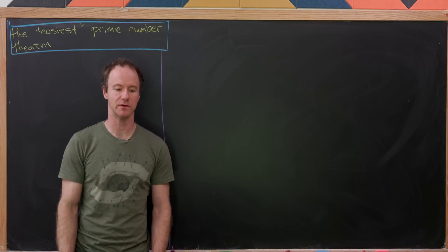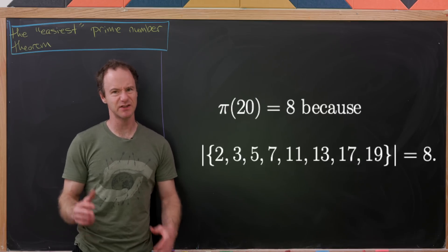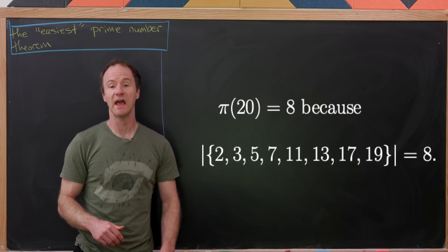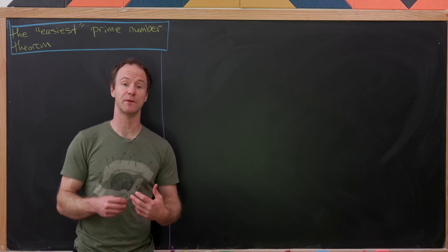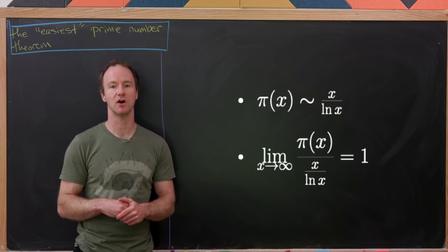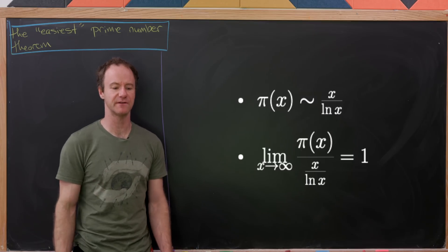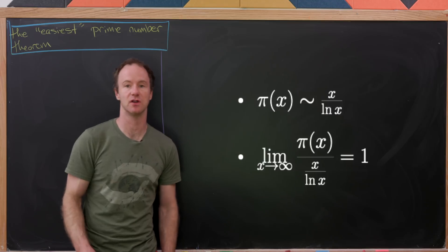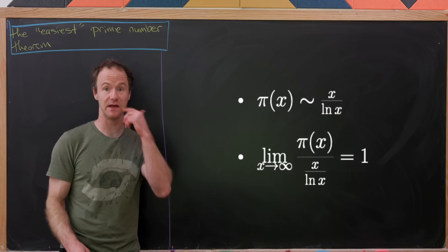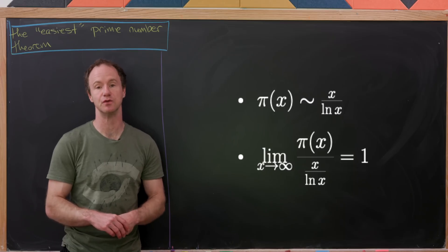As a simple example, notice that π(20) is equal to 8, because you can easily write down all 8 primes less than 20. The simplest version of the prime number theorem says that asymptotically — in other words, for very large values of x — π(x) grows similar to x over the natural log of x. This can be made more precise by saying that the limit as x goes to infinity of the quotient of those two functions is equal to 1.